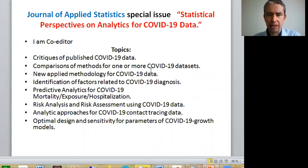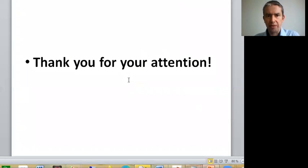I want to make a very important statement at the very end: we are going to publish a special issue in the Journal of Applied Statistics by Taylor and Francis. The name is Statistical Perspectives on Analytics for COVID-19 Data. We are publishing critiques of published COVID data, comparisons of methods and applied methodologies, identification of factors related to diagnosis of COVID, predictive analytics for COVID including mortality, exposure, hospitalizations, risk analysis, analytic approaches for COVID-19 contact tracing data, and optimal design and sensitivity for models of COVID-19 growth models.